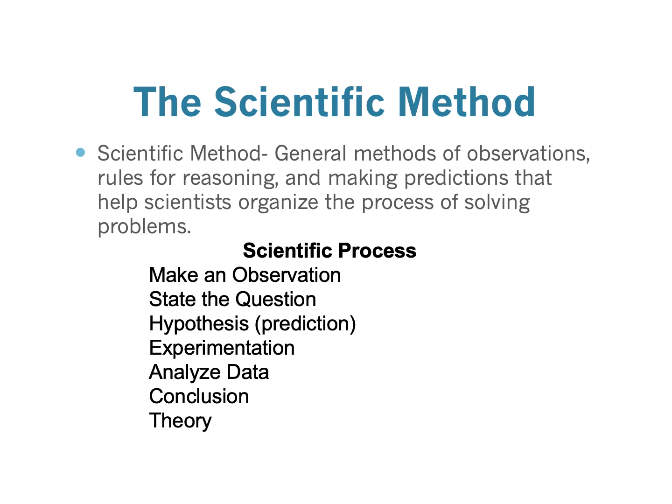The scientific method is a method of observation, reasoning, and making predictions — really, it's about organizing the process of solving problems. If you pick up 20 different introductory science textbooks, somewhere there's going to be a section about the scientific method, because that's how science is done. You'll often see a list of steps: make an observation, state the question, form a hypothesis which makes a prediction, do experiments to test the hypothesis, analyze your data, form a conclusion, form a theory, and repeat as necessary. I don't really like how this is presented, because it looks like a recipe — like I do this step, I do that step, and then poof, out pops science.